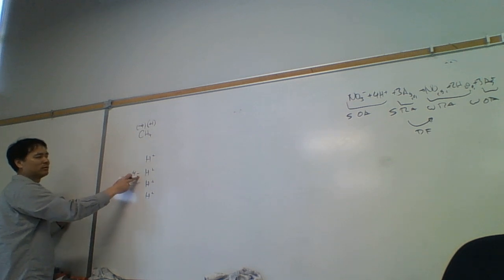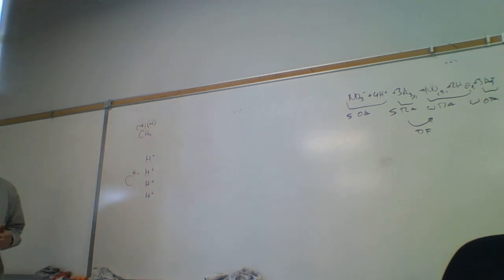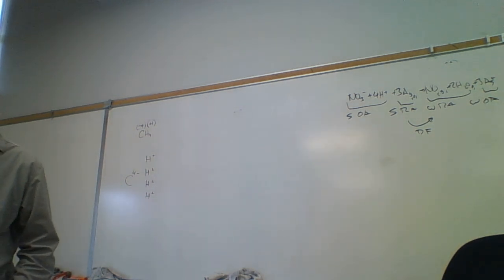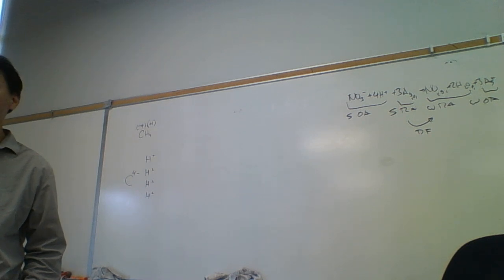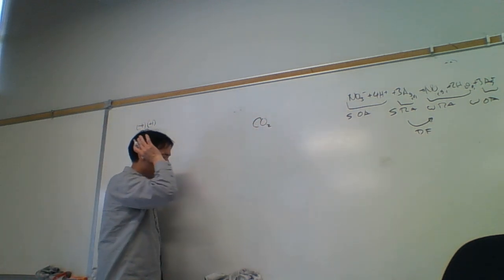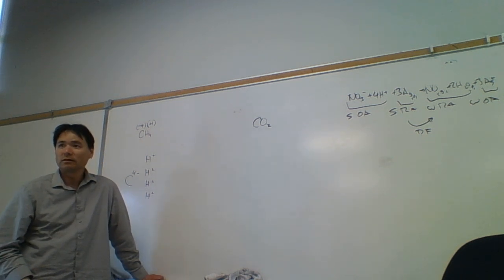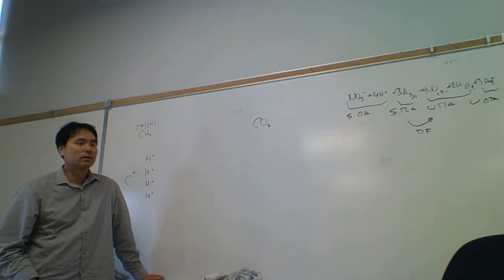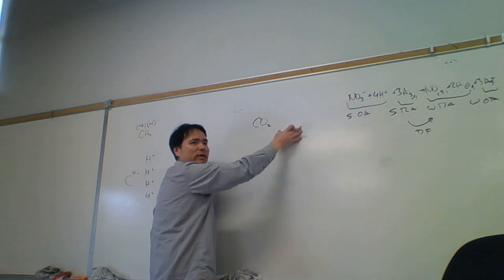When we write ions, we usually write the number first and then the charge. But our oxidation state is always the charge, then the number. So the carbon in methane is electron rich. When you burn methane, or when methane explodes, what forms? CO2 and water. Can CO2 be burned further, or do we stop there? We stop at CO2.